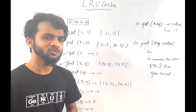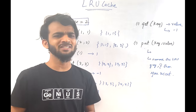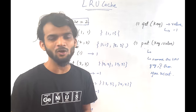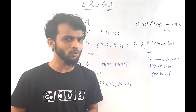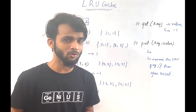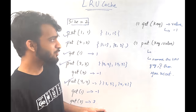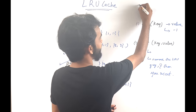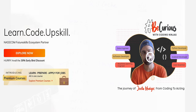You could implement this with arrays, but that gives linear complexity. The goal is to design both the get and put functions with O(1) time complexity.